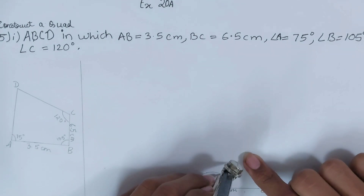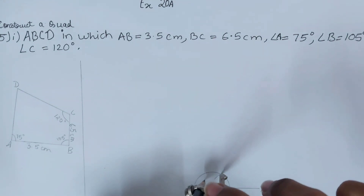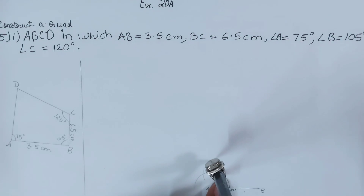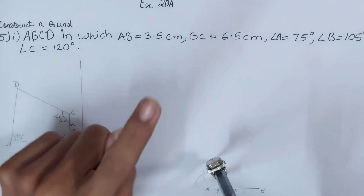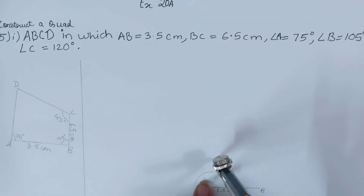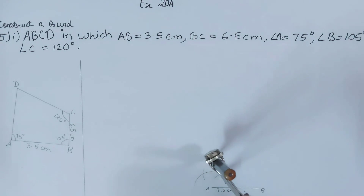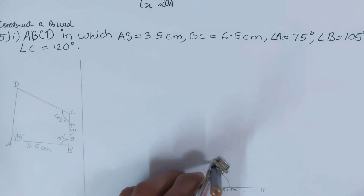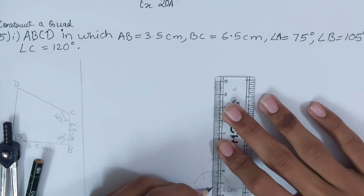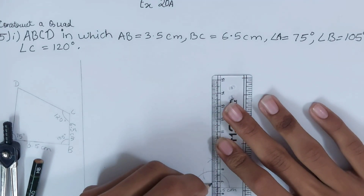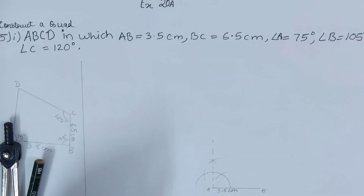Keep the compass pin at the 60° point and cut another arc to form 120°. Now we have 60° and 120°. To get 90°, cut one arc from the 60° point and another from the 120° point — their intersection is 90°. Join this with a dotted line. We now have 60° and 90° marked.